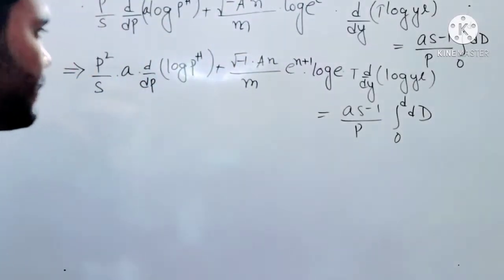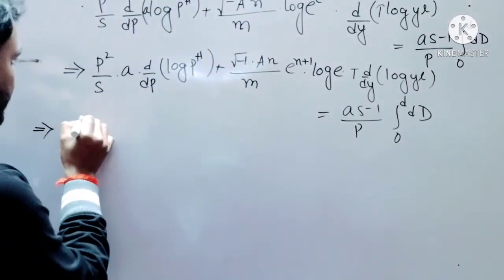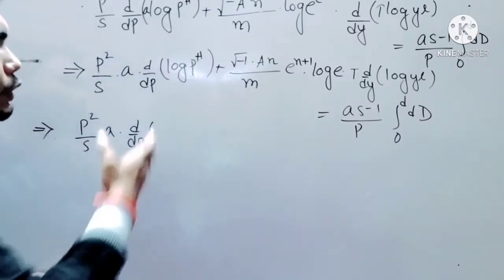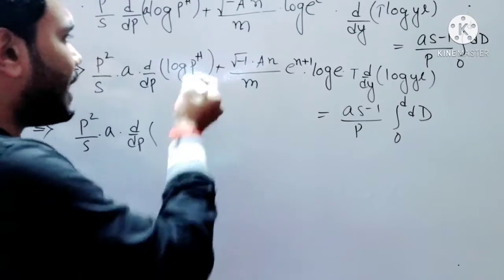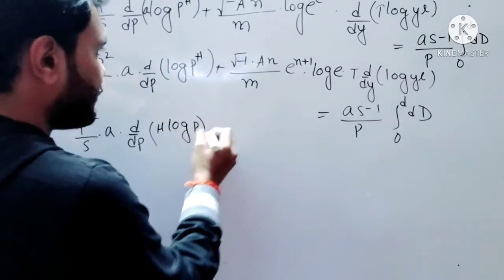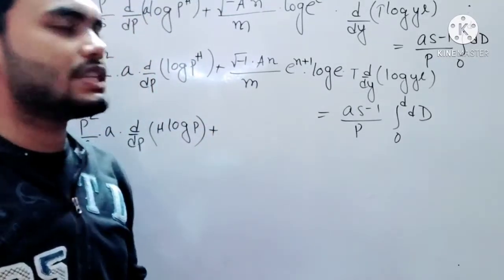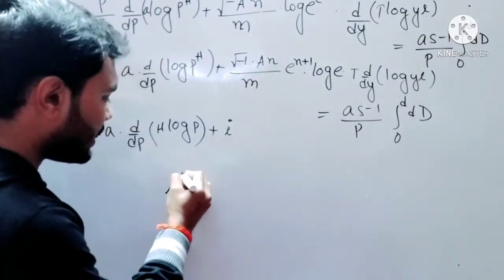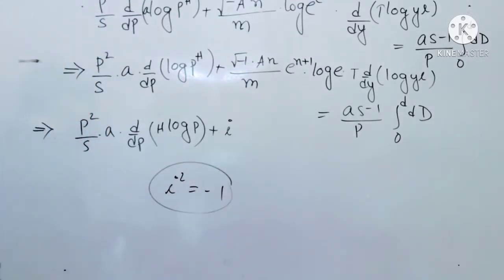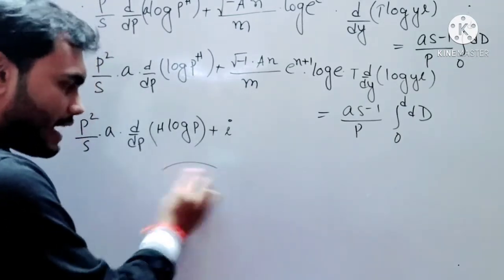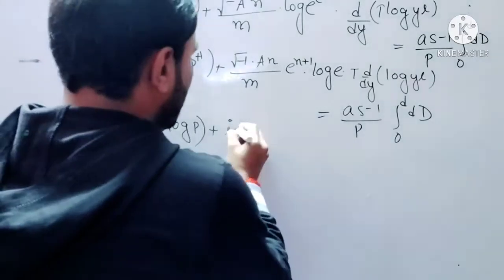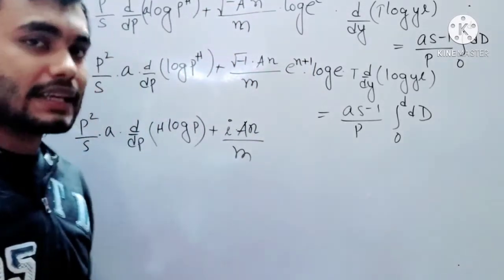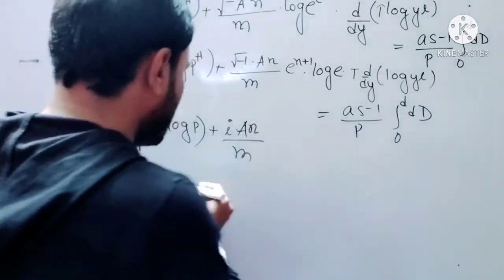Now, p squared over s into a times d/dp: any power given to the argument of log comes in front, so it is becoming h log p. From complex numbers we know that root of minus 1 is denoted by iota, i.e., i, and i squared equals minus 1. So we substitute that. a is remaining as it was, n is remaining, and in the denominator it is m.